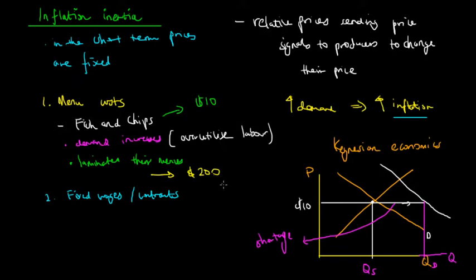So it becomes inefficient for these fish and chip shop owners to actually change or redo their menus. The equilibrium price here for fish and chips is at $15. So they want to increase the price to $15, but they can't because they have to redo their menus, and that will cost an extra $200. So they can't actually increase their price to $15 because of these menu costs.